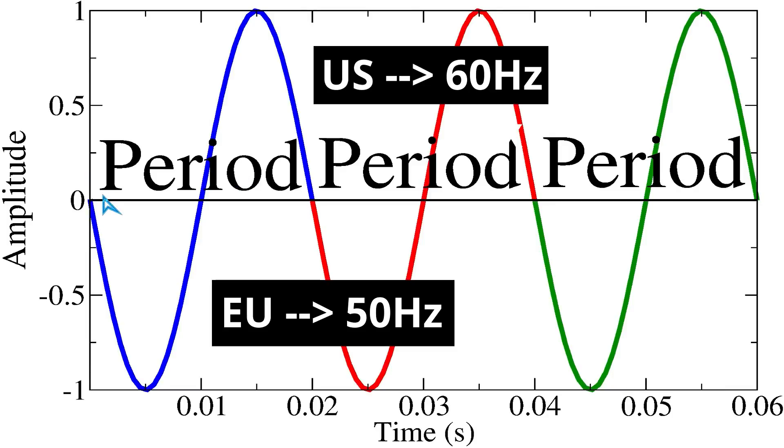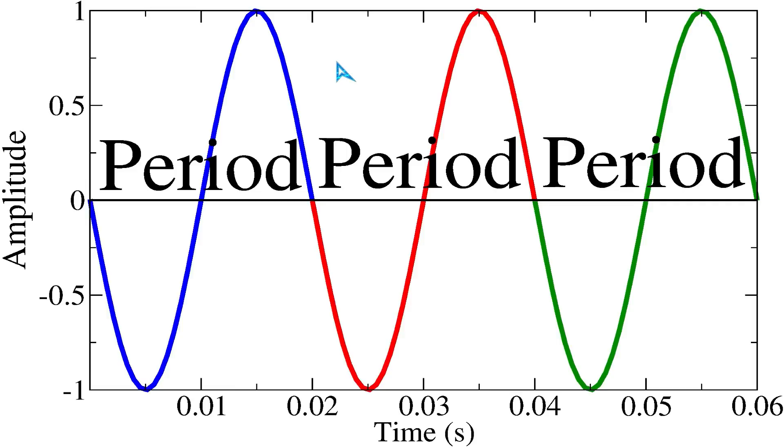Most probably you will know that in Europe the line frequency is 50 hertz, whereas in the US it is 60 hertz. What does this actually mean?